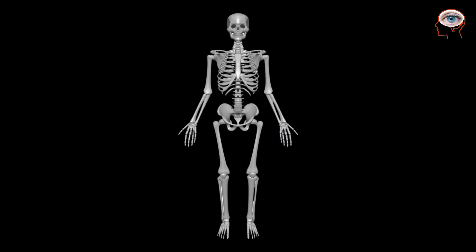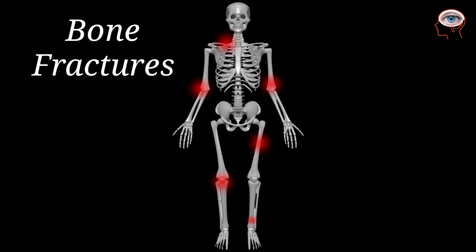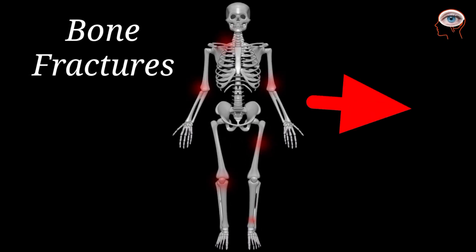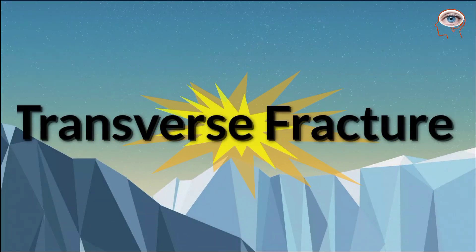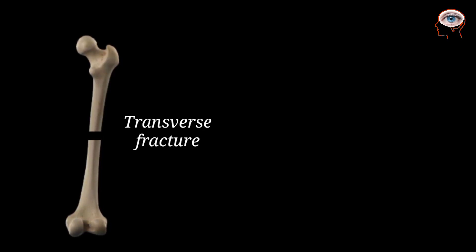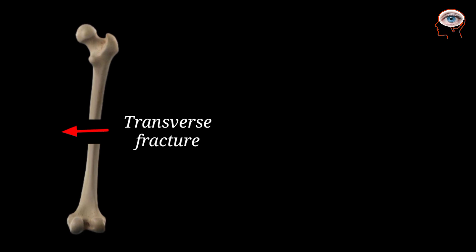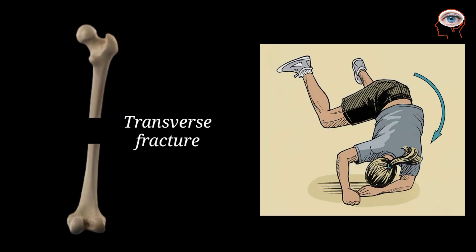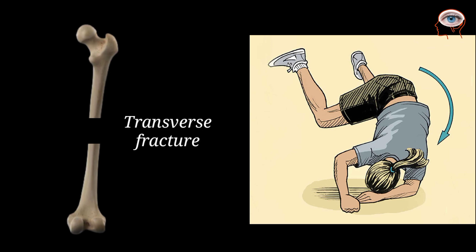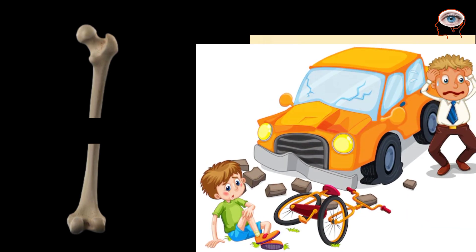There are many types of bone fractures. Number one is transverse fracture. Transverse fractures are breaks that are in a straight line across the bone. This type of fracture may be caused by events like a fall or automobile accidents.